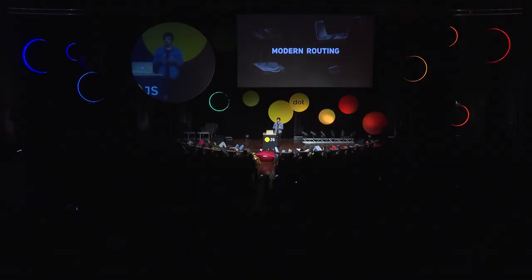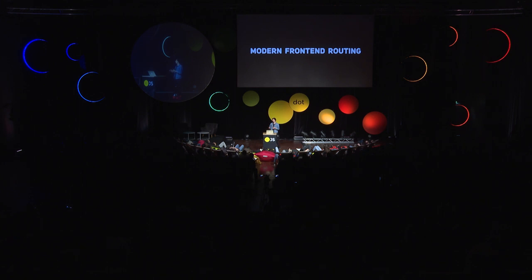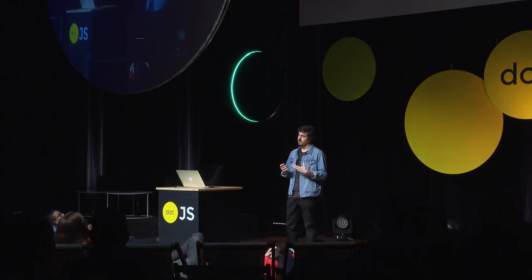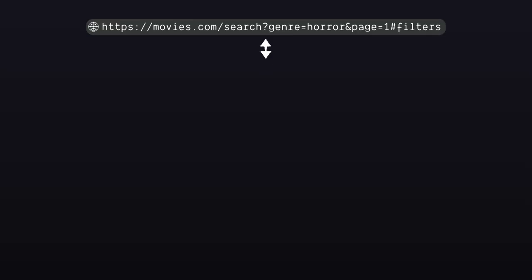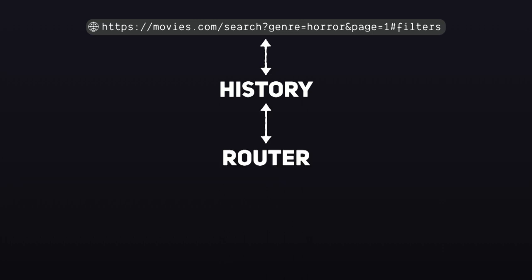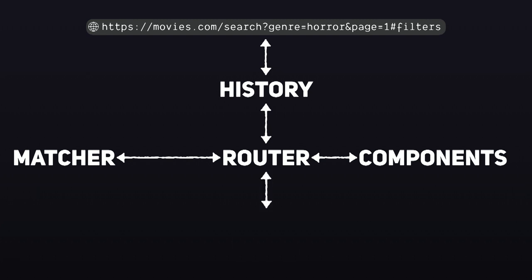Today I want to talk about modern routing — not those little devices that give you internet access and how the new models are starting to look like drones and even Star Wars starships. That's not the topic. The topic is front-end. So every time I refer to routing, I will be referring to modern front-end routing. I want to give you a look at what we do behind a router and some deep dive into specific technical topics. We will see how we go from a URL to communicate with a history module, how the history module communicates with a router, how the router communicates with what we call a matcher, and also some components, to finally get to you, the developer.